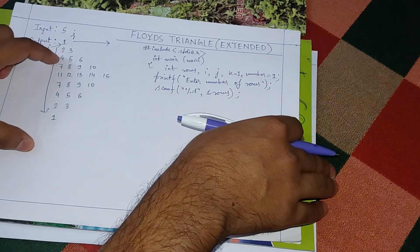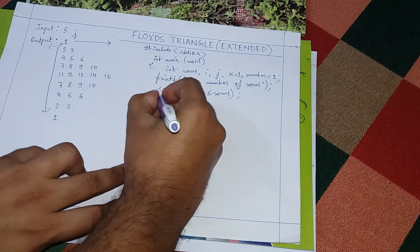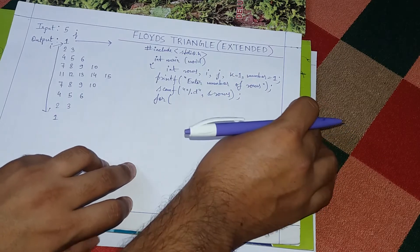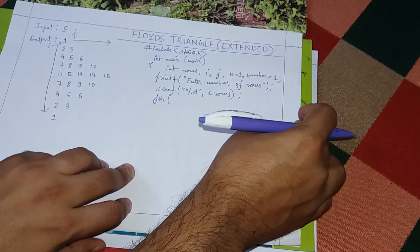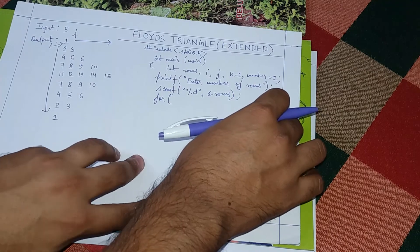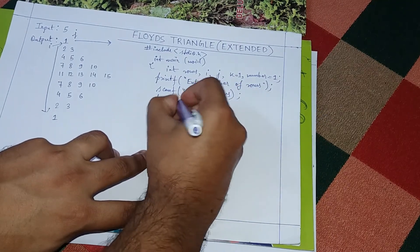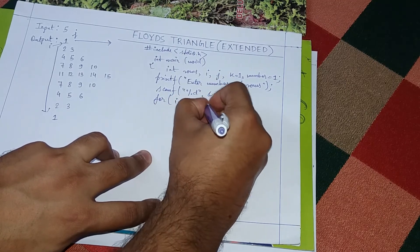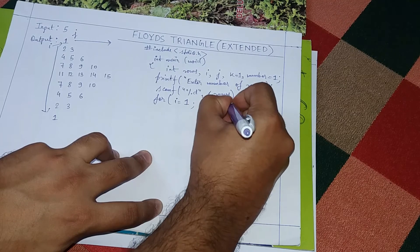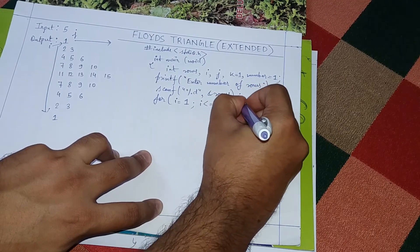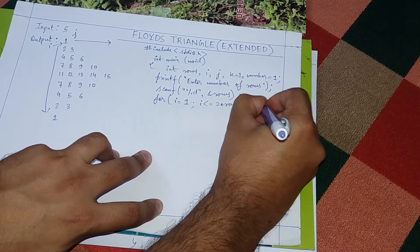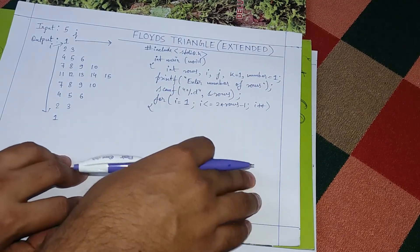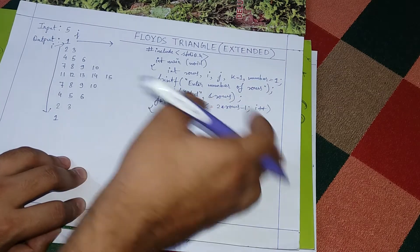Now we start the i-loop, which takes care of the total number of rows. The i-loop goes from one to two times the number of rows minus one. That is simple.